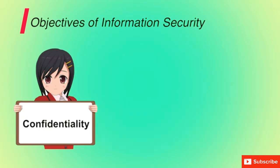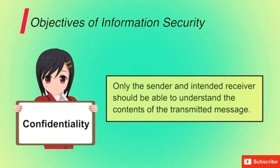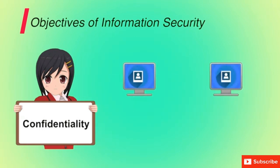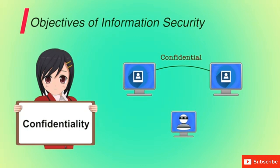The first objective is confidentiality. It means to control or restrict access of critical or sensitive information to an individual. Loss of confidentiality is the unauthorized disclosure of information. For example, if you are sending your picture to your friend, it should be confidential between you and your friend. If any other person is doing eavesdropping during your communication, then it breaks the confidentiality of the message.